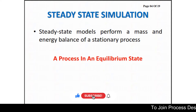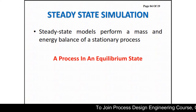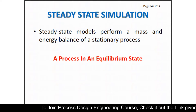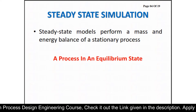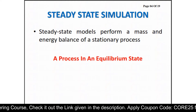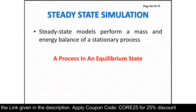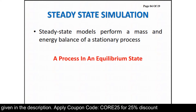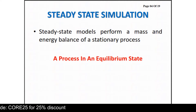There are two types of simulation in Aspen HYSYS. The first one is steady state simulation, and the other one is dynamic simulation. A steady state model performs a mass and energy balance of a stationary process — or you can say a process in an equilibrium state.